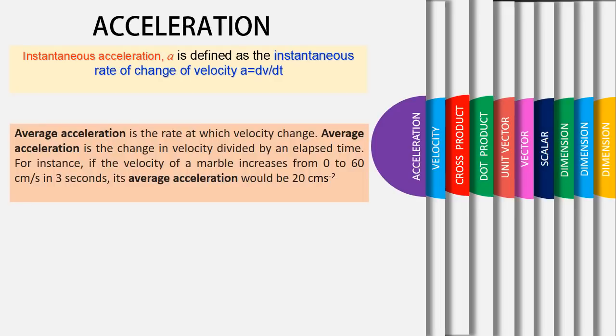Average acceleration. Average acceleration is the rate at which velocity changes. Average acceleration is the change in velocity divided by an elapsed time. For instance, if the velocity of a marble increased from 0 to 60 cm per second in 3 seconds.